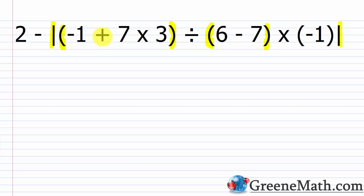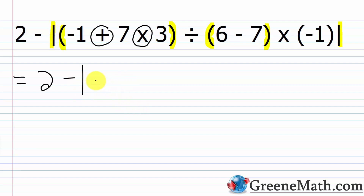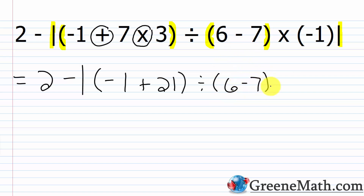Inside the first set of parentheses: negative one plus seven times three. We have multiplication and addition — multiply first. Seven times three is 21. So now inside those parentheses we have negative one plus 21. The sign is positive, 21 minus one is 20. So those parentheses evaluate to 20.